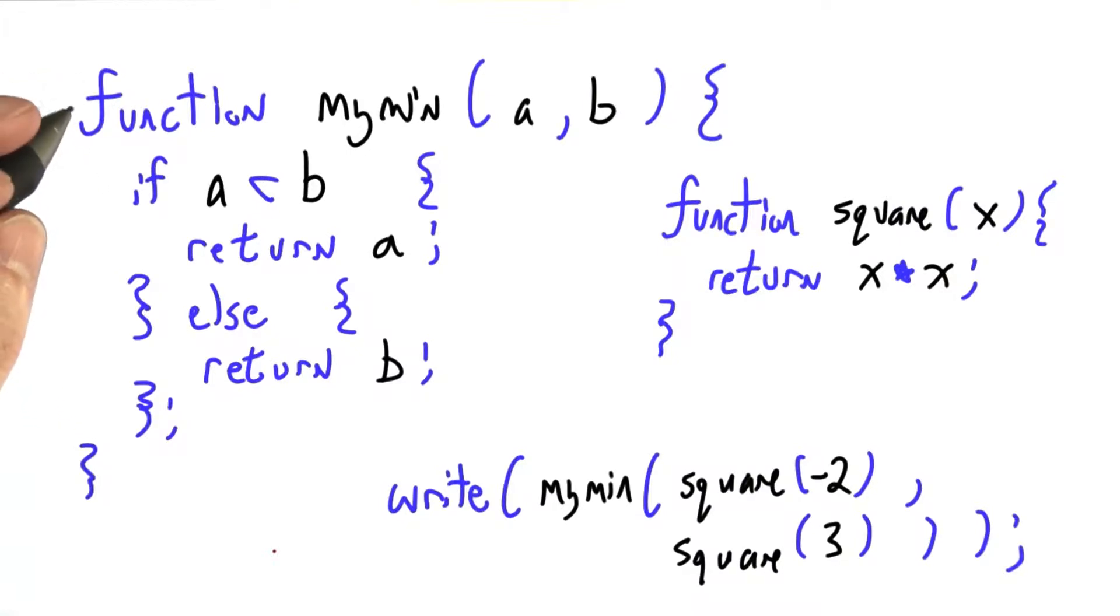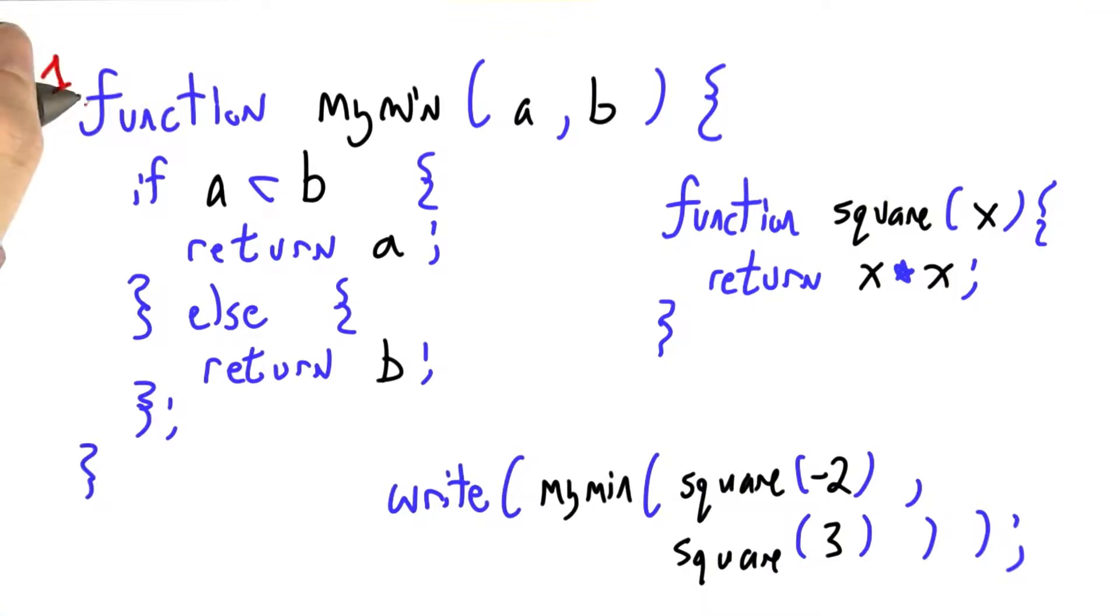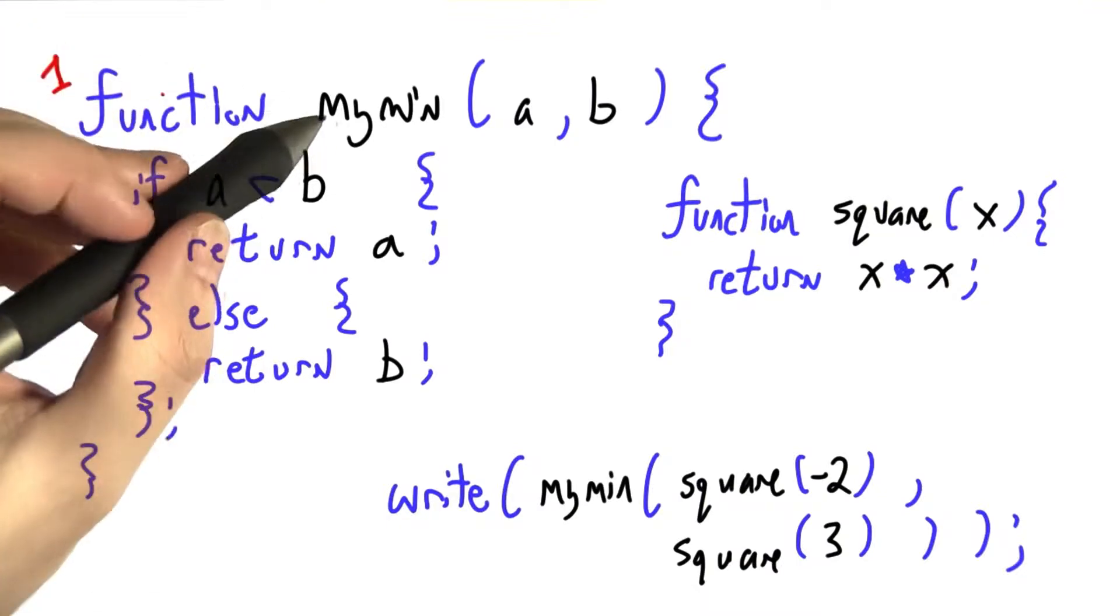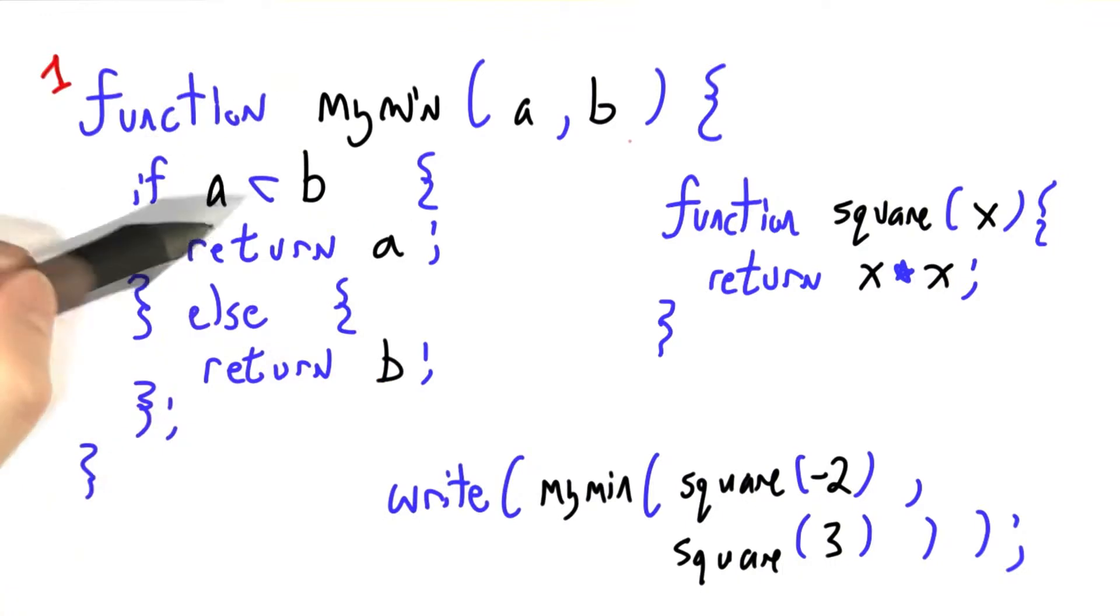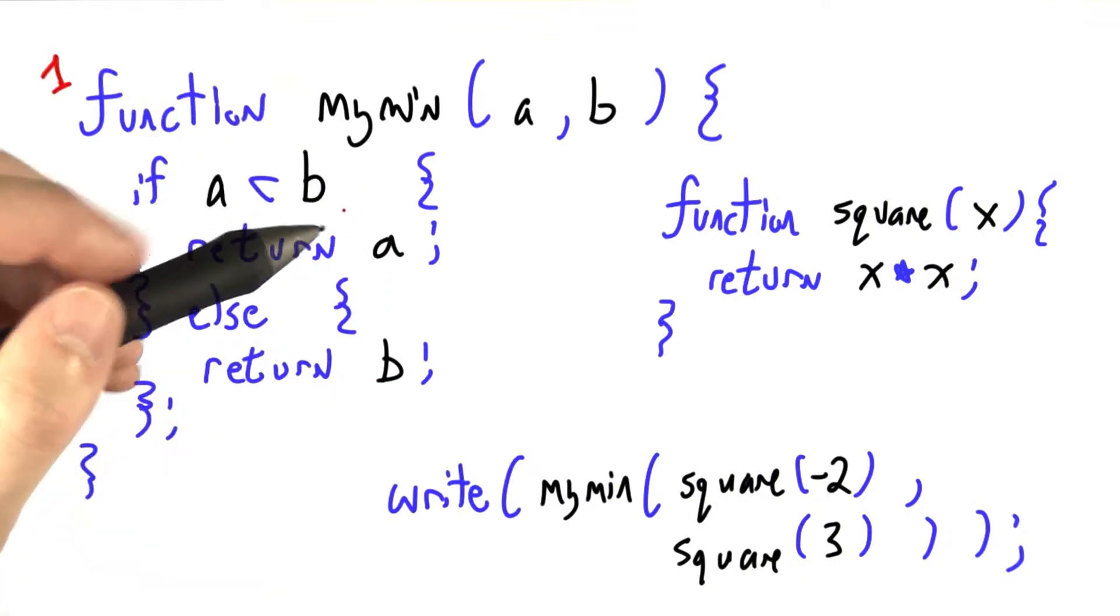All right, so here I have written out three JavaScript elements. Number one, a function definition of a function mymin given two arguments a and b. If a is less than b, we return a, otherwise we return b. We're returning whichever one is smaller.